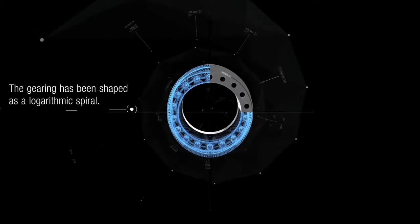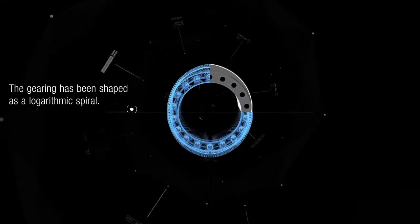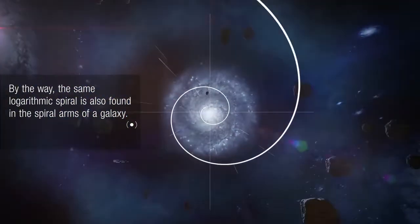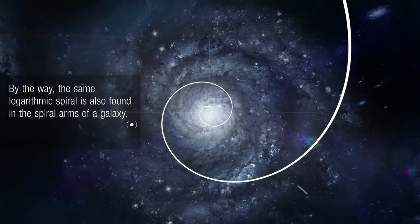The gearing has been shaped as a logarithmic spiral. By the way, the same logarithmic spiral is also found in the spiral arms of a galaxy.